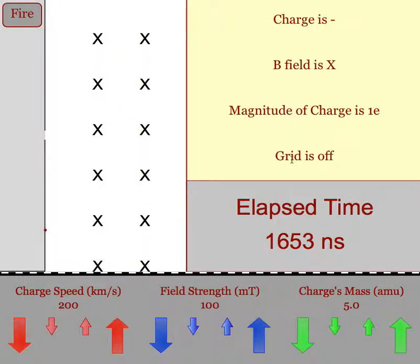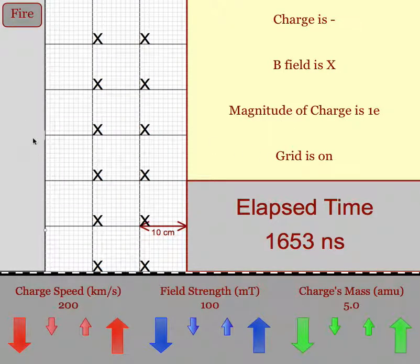Students can measure the radius of the circle that the particle follows by turning on the grid. Each line represents one centimeter, and each dark line represents ten centimeters.